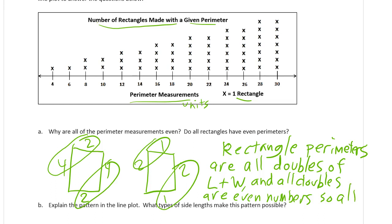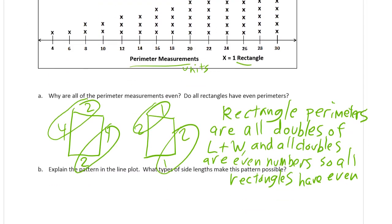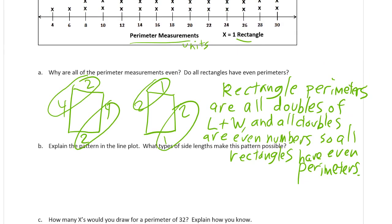So all rectangles have even perimeters. If you really want to get all the points, you might want to mention the exception: if you have fractional lengths — like if this was two and a quarter, and one and a quarter on each side — you'd end up with a perimeter of seven. You'd have to have some kind of fraction for it to work out to be a whole odd number, but that's really not what we're considering here.